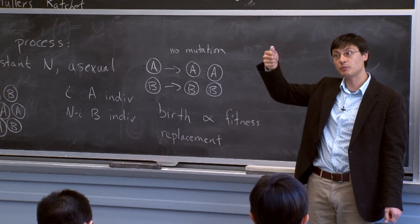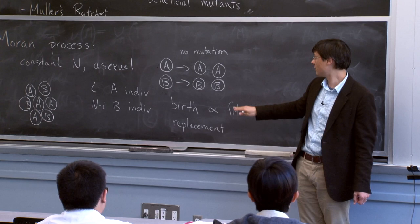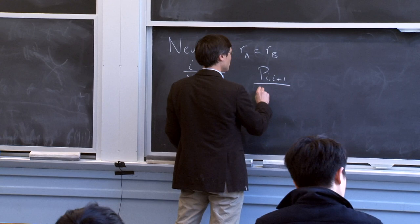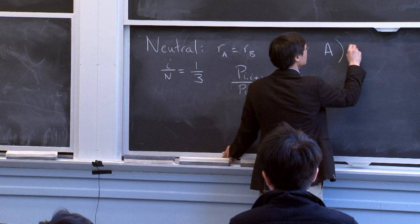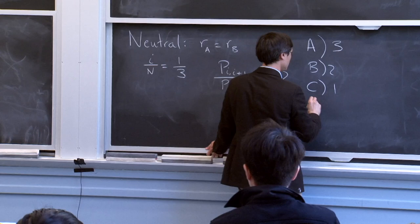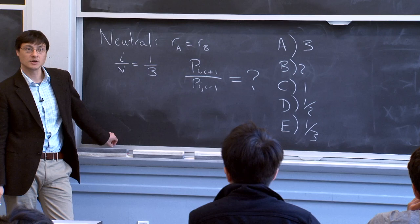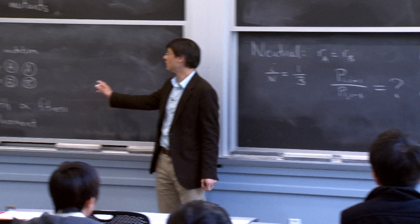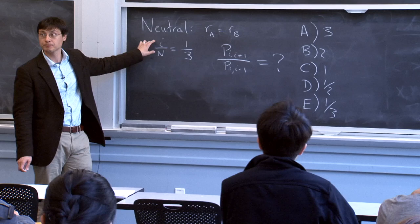Let's start with the neutral case: fitness r_A equals r_B. Assume i/N equals 1/3, so 1/3 of the population is A and 2/3 is B. We consider the probability of going from i to i+1 compared to going from i to i−1 — these are the probabilities that in one birth-replacement cycle, the number of A's goes up or down by 1. You can never go up by 2 or more in one step. What is the ratio of these two probabilities?